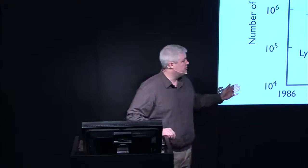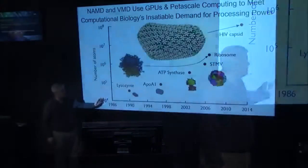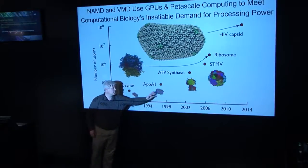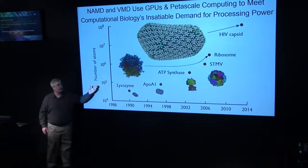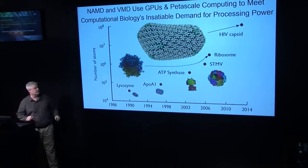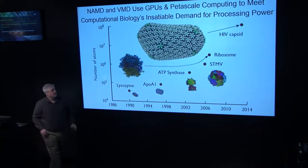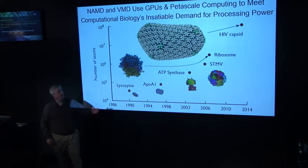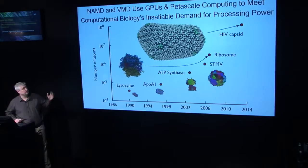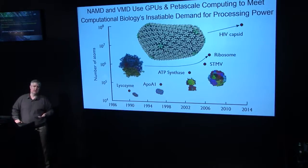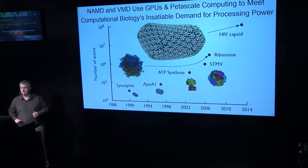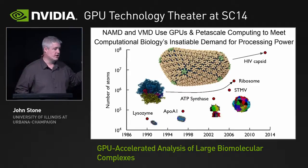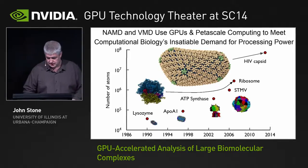The size of these simulations has grown tremendously. I started working in this field in approximately 1998, when the largest simulations were on the order of 10,000 atoms. Looking forward to 2014, the HIV simulation published last year was 64 million atoms, and there are currently people producing 100 to 200 million atom simulations. So we have to find ways of speeding up not only the simulations, but also the analysis and visualization.